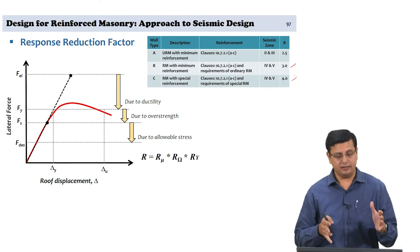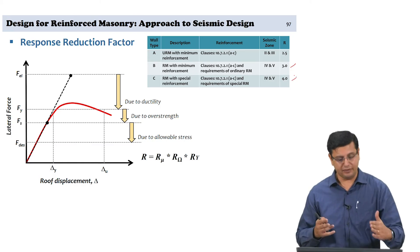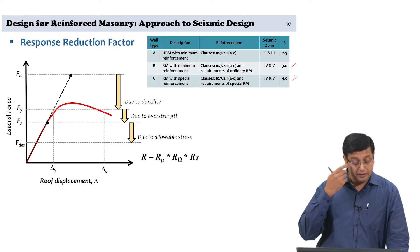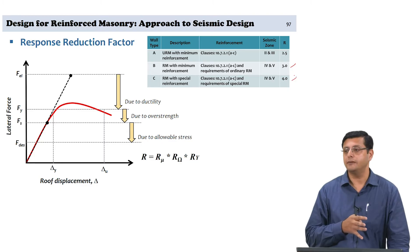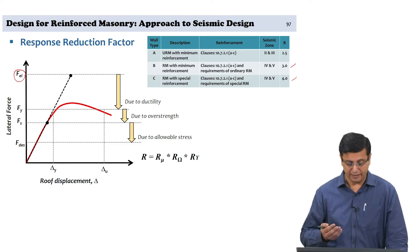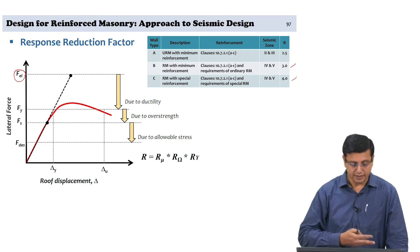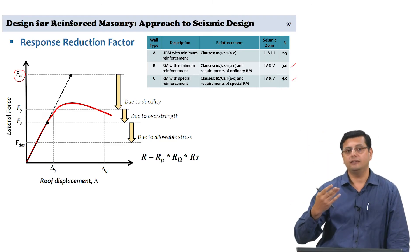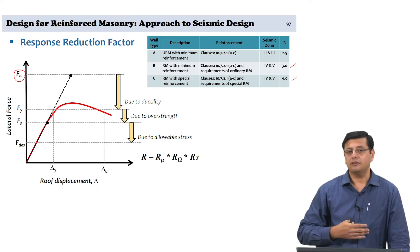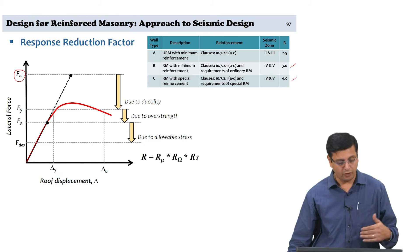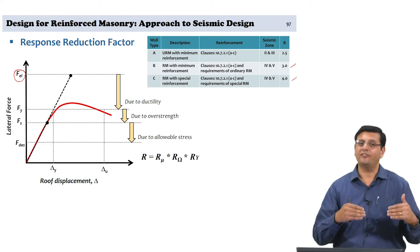Based on the initial elastic stiffness — the dotted line along the initial curve — we can determine the total elastic force the structure is to be designed for. However, you do not design for the elastic force, considering that the structure cannot sustain the full elastic force but starts deforming and getting damaged significantly. The damage formation behavior observed in a given typology must be accounted for, so F_elastic is not what you design for.